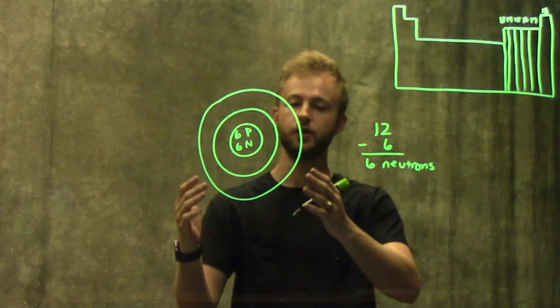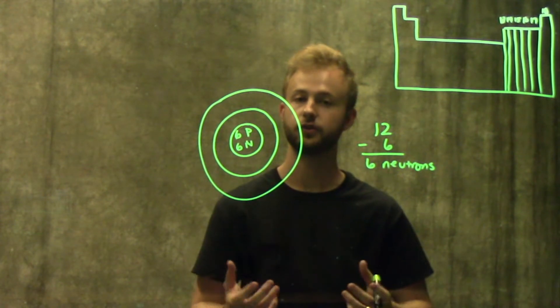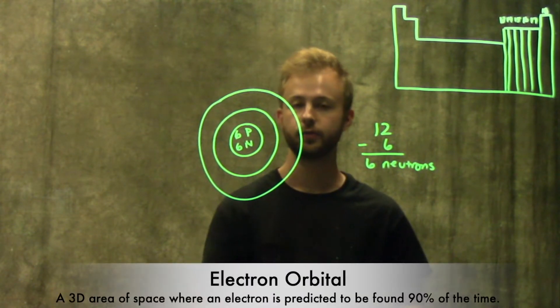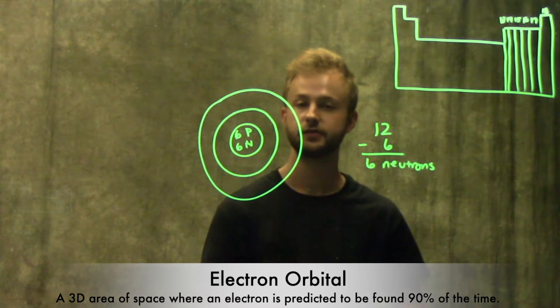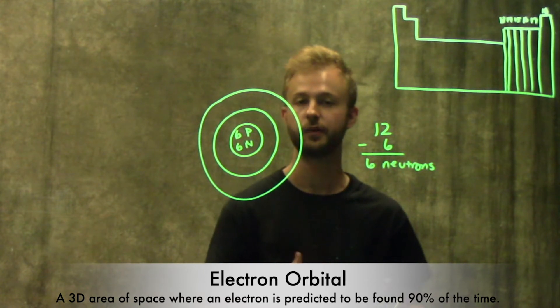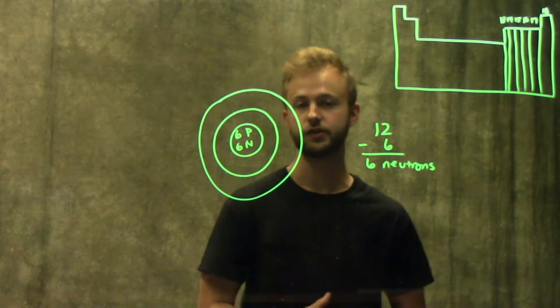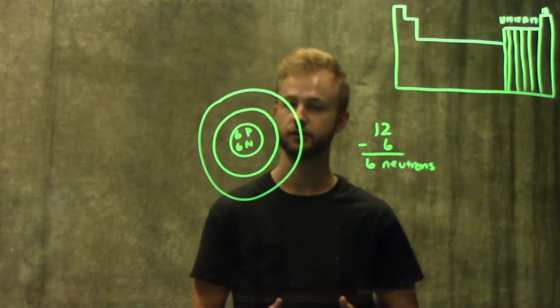Within each of these electron shells, we have something called electron orbitals. An electron orbital is a three-dimensional area of space where an electron is predicted to be found about 90% of the time. Each orbital can only hold a maximum of two electrons.